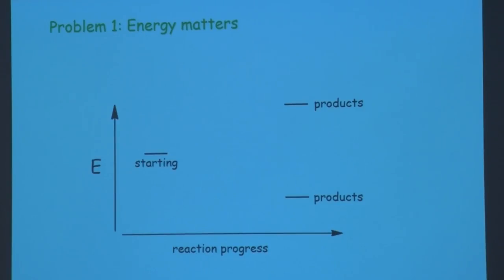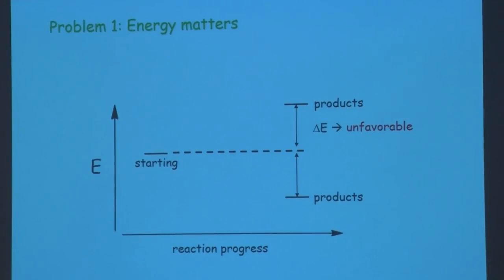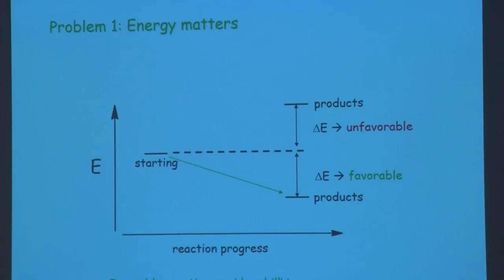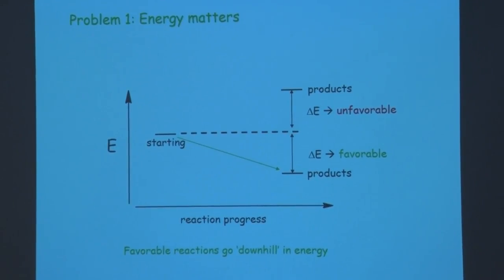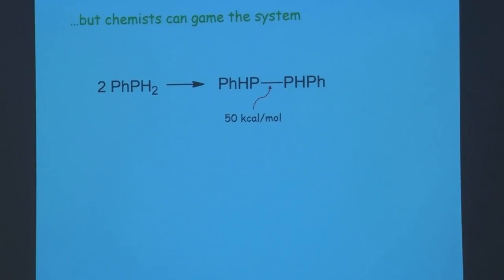If the products are at higher energy, that is not a favorable process — you had to put energy into the system and it will not spontaneously happen. If the energy goes lower, the reaction is favorable. In general we like favorable reactions — those that go net downhill. Splitting water is an uphill process, and that's the problem with it.